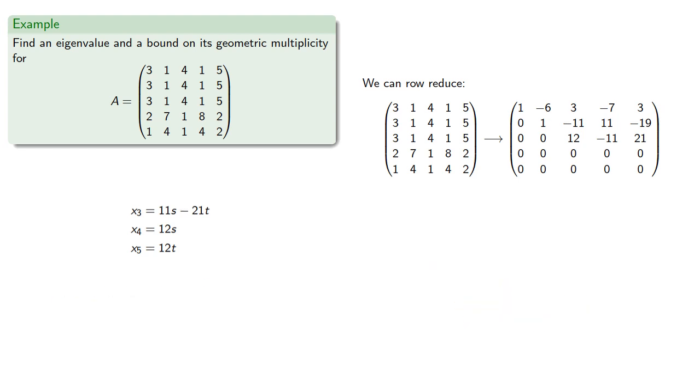Now that we know x3, x4, and x5, the second row gives us the equation, which we can rearrange.